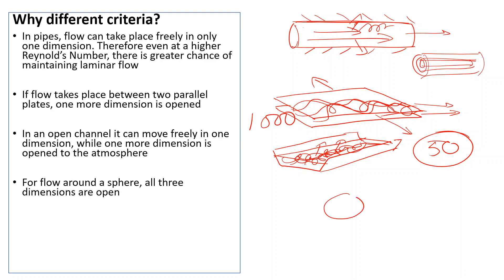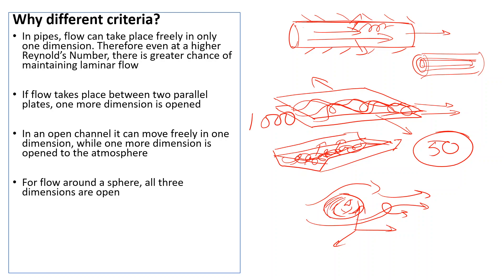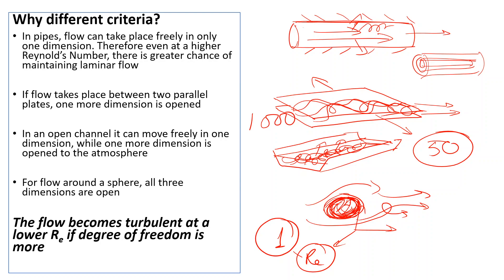For flow around a sphere, the flow is not confined at all — it moves around a solid surface with all three dimensions open. Fluid can move in all directions, so even at very small velocities the flow becomes transitional or turbulent, making the laminar limit only 1. In summary, flow becomes turbulent at a lower Reynolds number when the degree of freedom is higher — from pipe flow with one degree of freedom up to flow around a sphere with three.